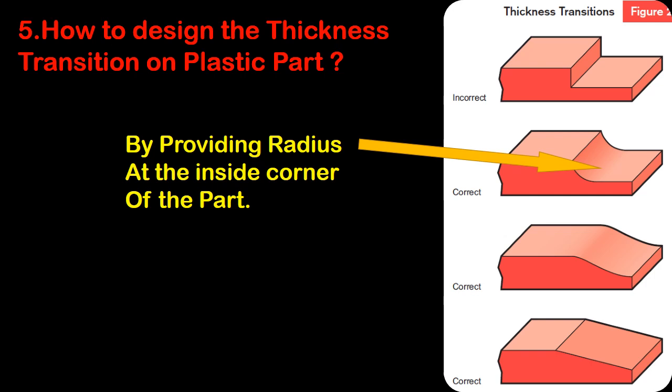Question number five: how to design the thickness transition on a plastic part? As shown in the figure, we can see the thickness variation and just need to provide a radius on sharp corners. As per the figure, we can provide different forms of radius and chamfer as well.